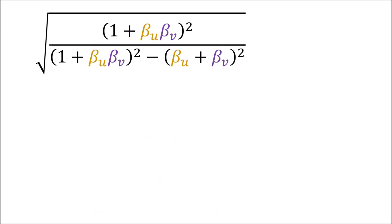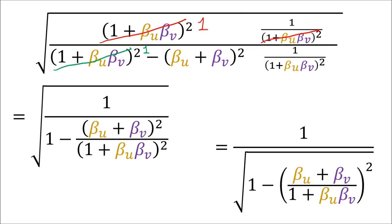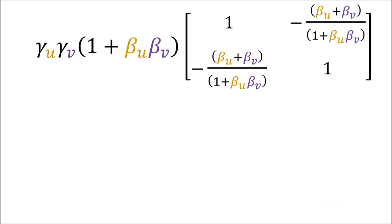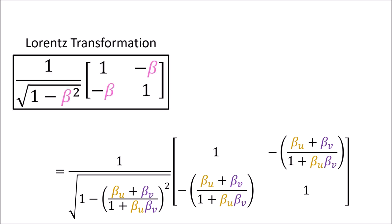Looking at the three terms under the square root sign, if we divide both the numerator and denominator by (1 plus beta-u beta-v) squared, some terms cancel and go to 1, and we end up with the simplified coefficient outside the matrix. Bringing back the matrix, we've discovered that we can write the coefficient in front as this big square-rooted term, and the matrix has the same format as a Lorentz matrix except beta is replaced by (beta-u plus beta-v) all over (1 plus beta-u times beta-v).